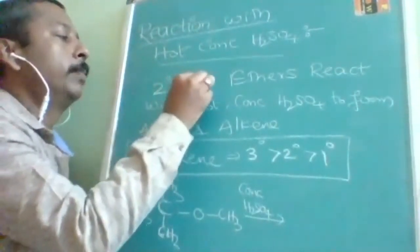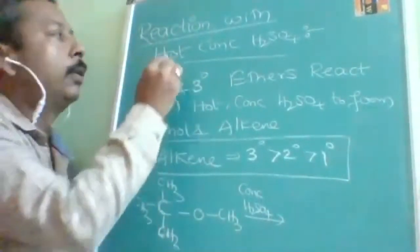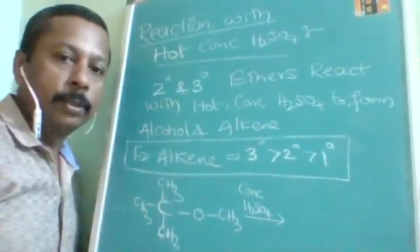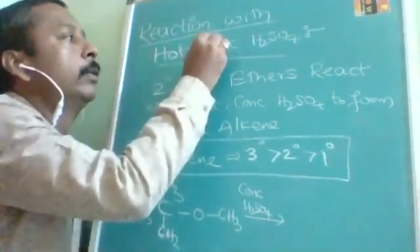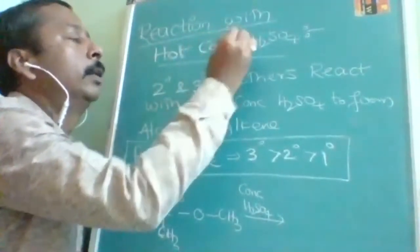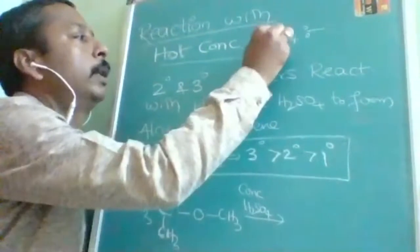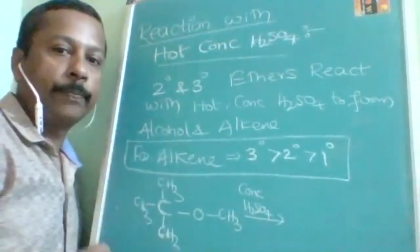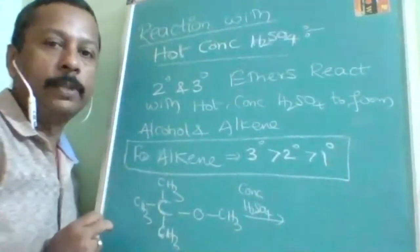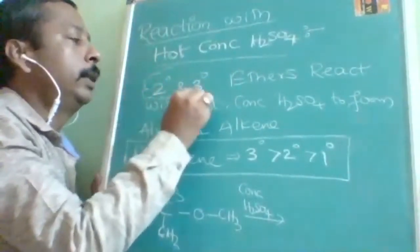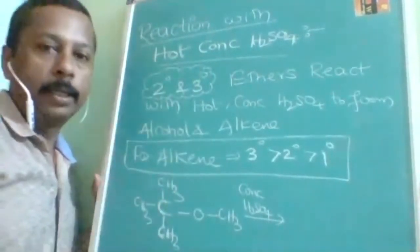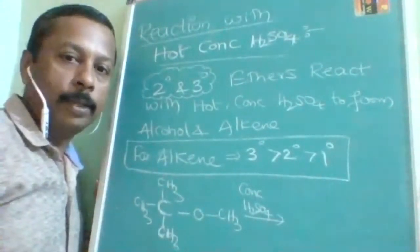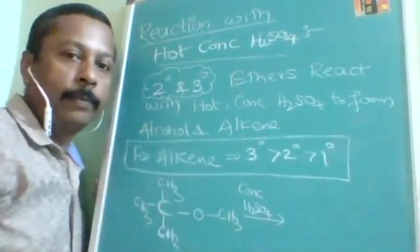Now, in the next property: reaction with hot and concentrated sulfuric acid. Don't get confused — we have already studied the preparation of ethers using sulfuric acid where sulfuric acid was the reactant. Now here, ether is the reactant. The main condition is that the ether must have at least one alkyl group that is secondary or tertiary.